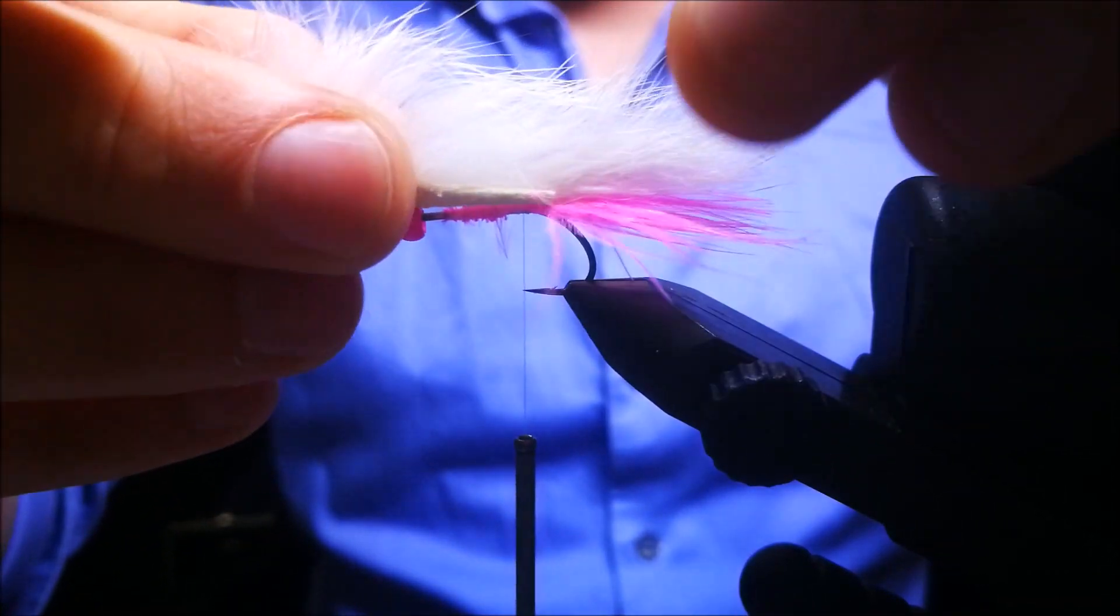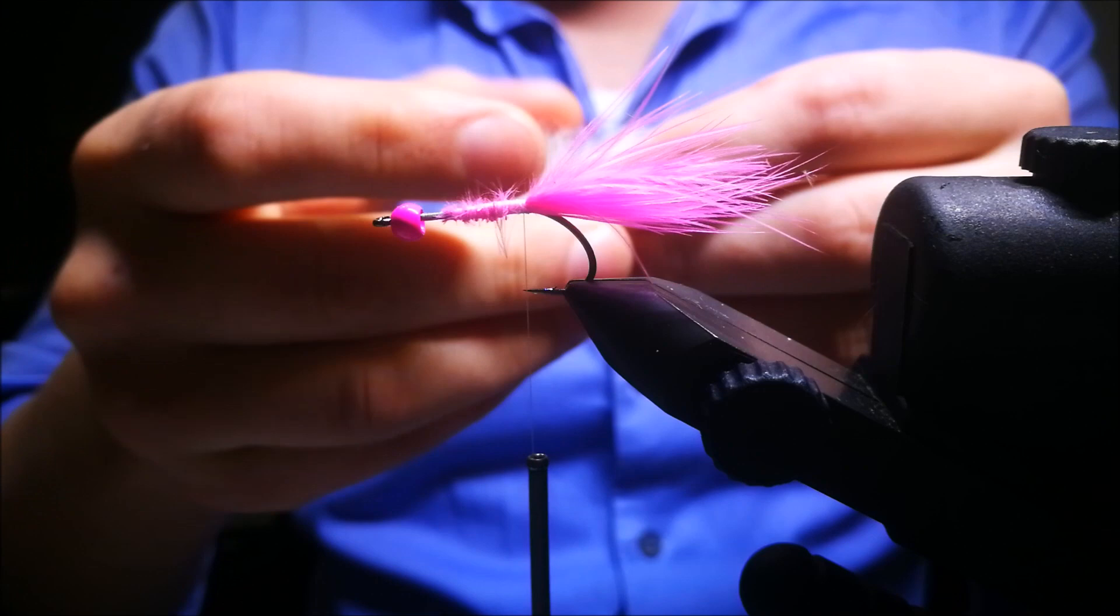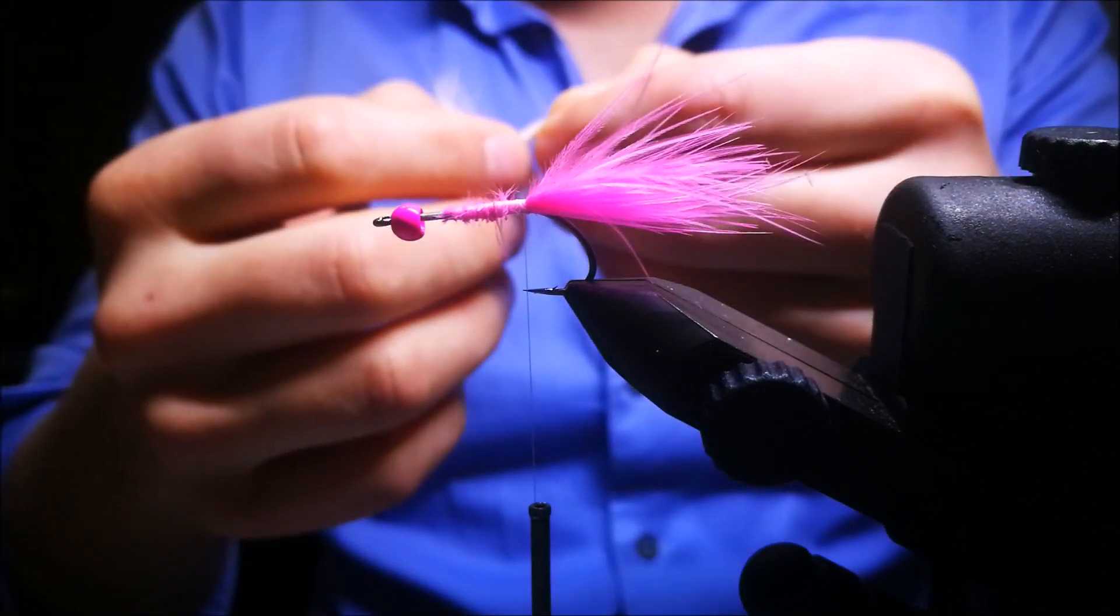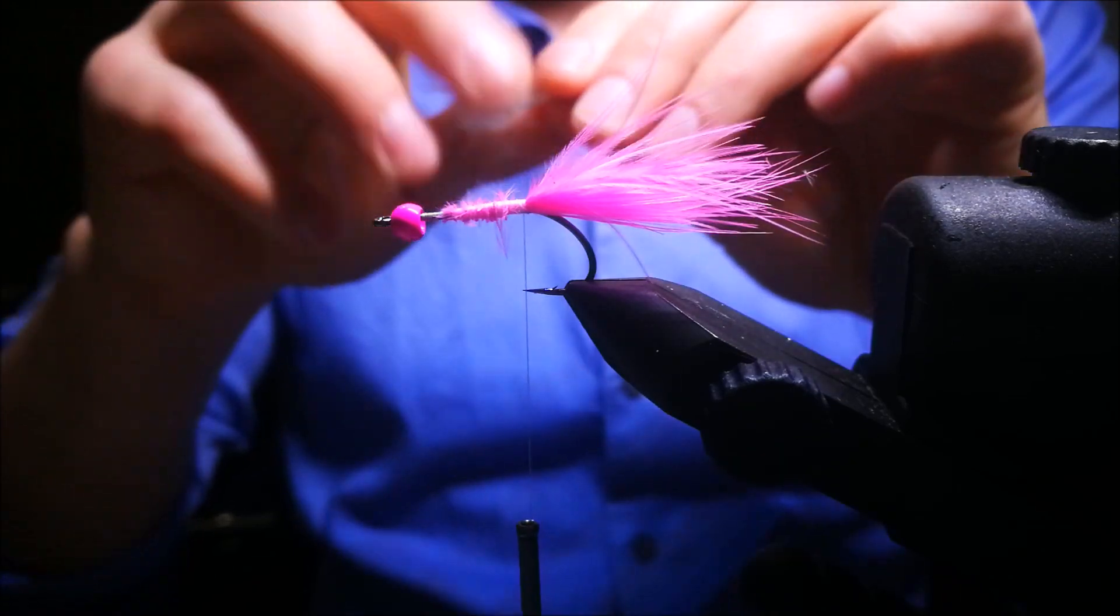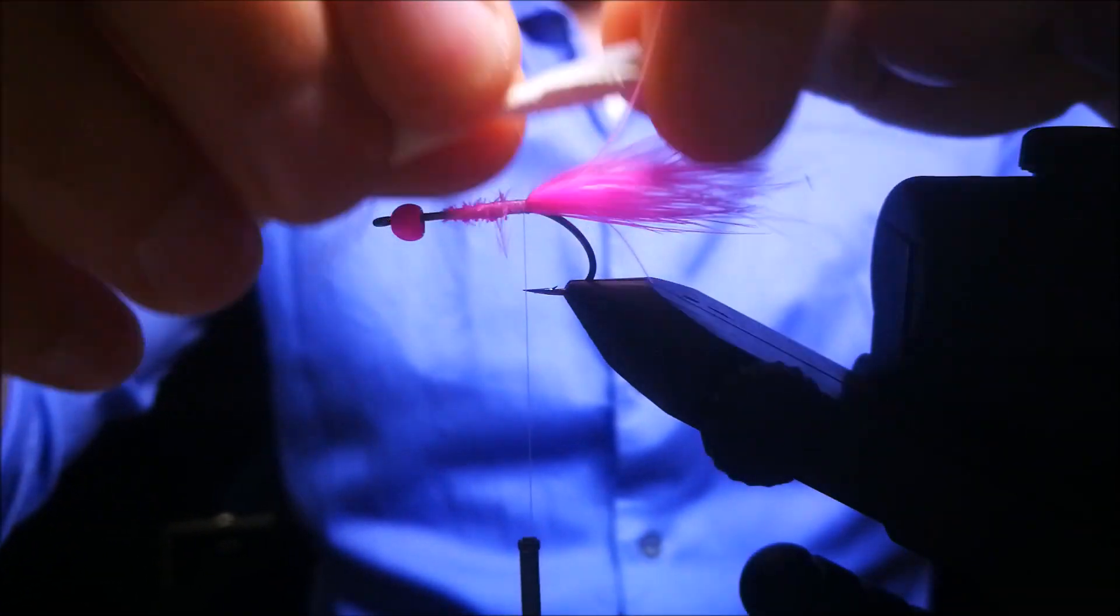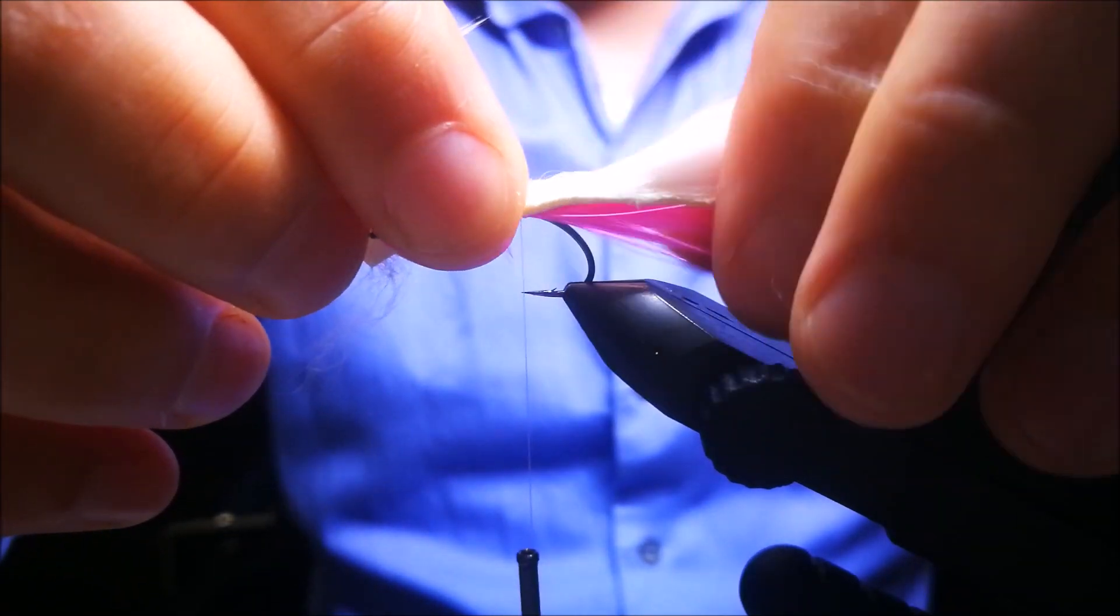Now prepare a shanker strip, which is supposed to be 2.5 times the length of the hook. Measure the back part of the skin to be the length of the hook, and divide the fibers in half. It's easier if you moisten the fibers with some saliva to spread them out.